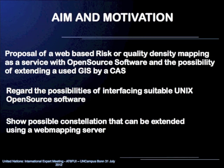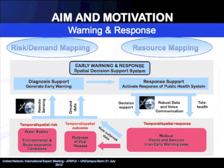In this context, possibilities of interfacing suitable Unix open source software are regarded, and furthermore the shown possible constellation structure can be extended using a web mapping server for getting more user-based interaction. I have shown an early warning and response cycle and want to identify where the density mappings computed by the web interface fit in. They are generated mappings that represent the density of available information according to the provided data. In a decision-making chain, the computed results can be useful for estimating the reliability of risk and demand mappings, but also of resource mapping based on the available information.